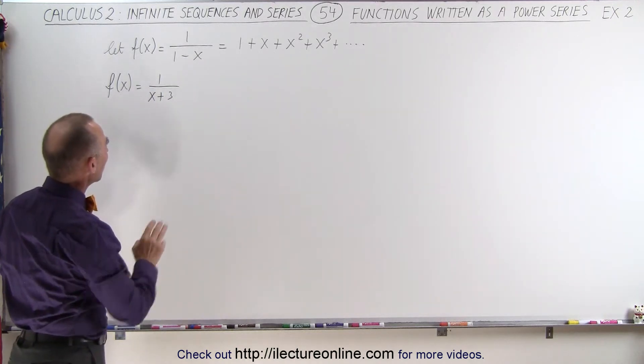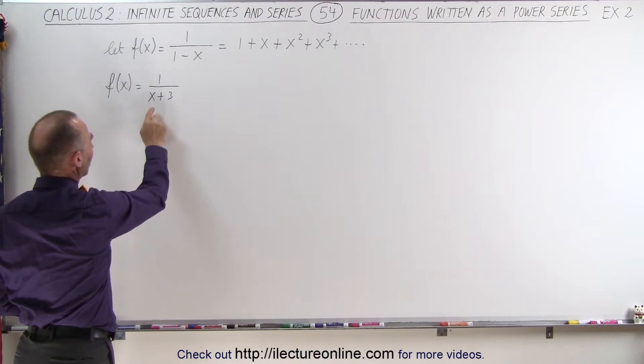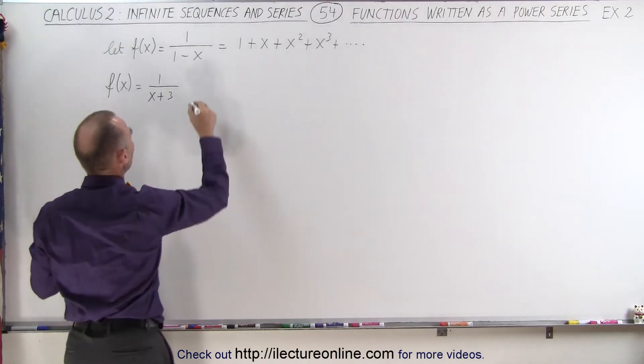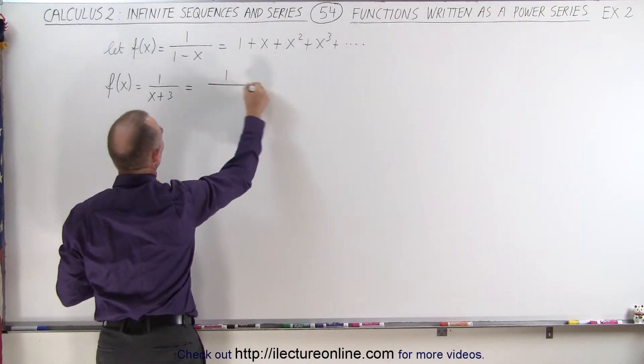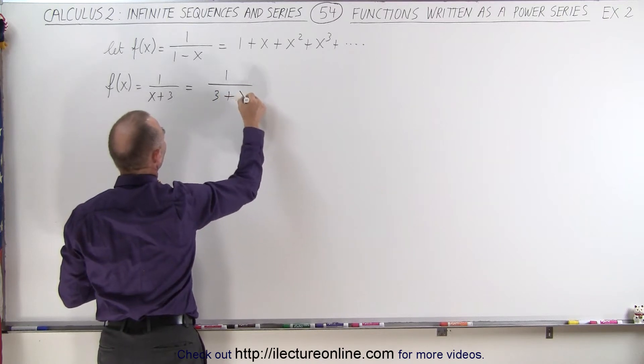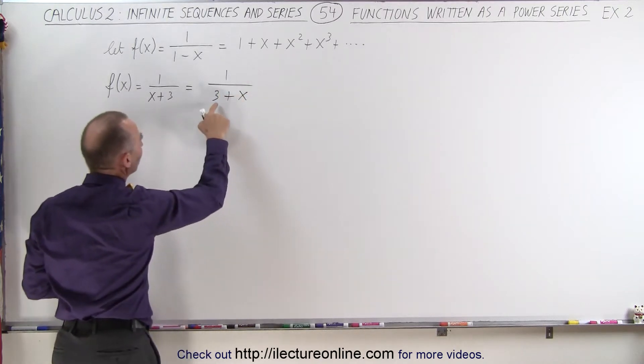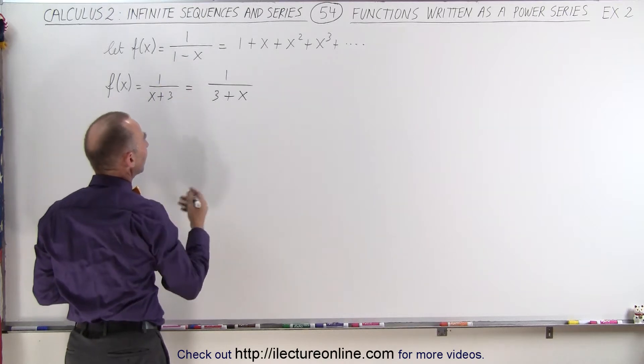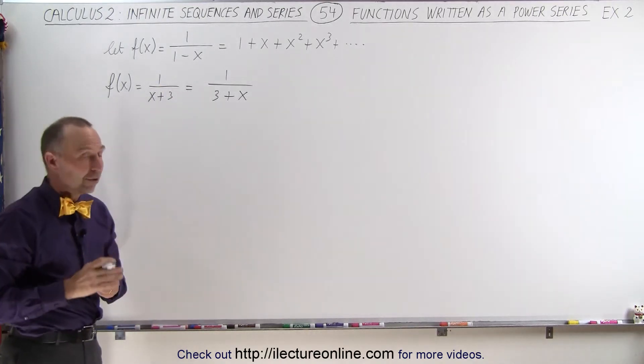The first thing we probably want to do is turn the denominator around and write it as 3 plus x. So let's do that. This is equal to 1 over 3 plus x. But we don't want a 3 there, we want a 1 there. So we can factor out the 3 from the denominator.